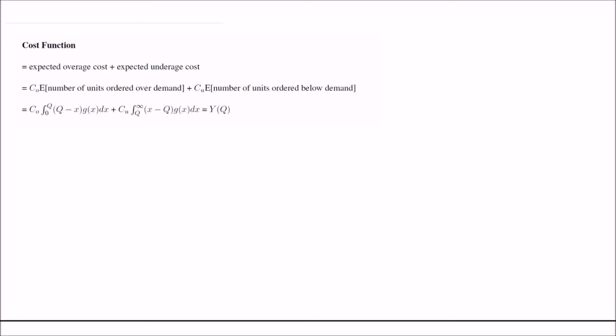Our cost function is composed of expected overage cost and expected underage cost. Mathematically, we represent this as CO times the expected number of units ordered over demand, plus CU times the expected number of units ordered below demand. These two values can be represented as integrals. Calling this summation Y(Q), we take the first derivative and set it equal to zero for optimization.